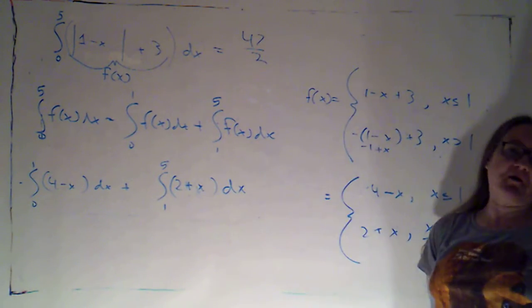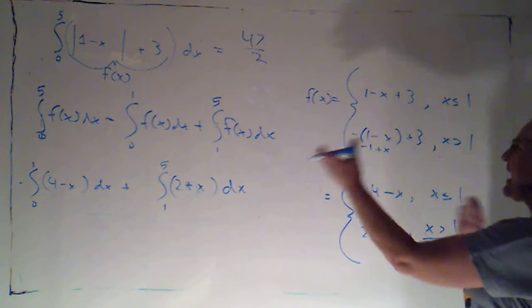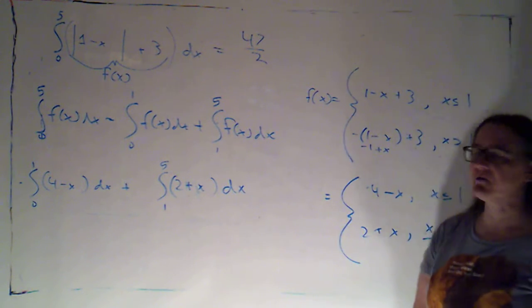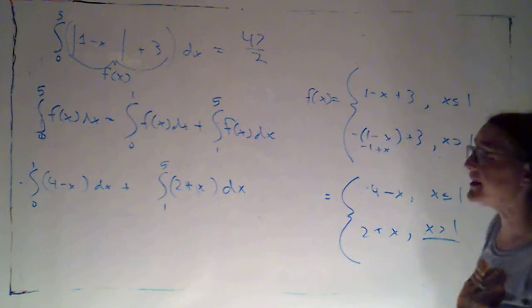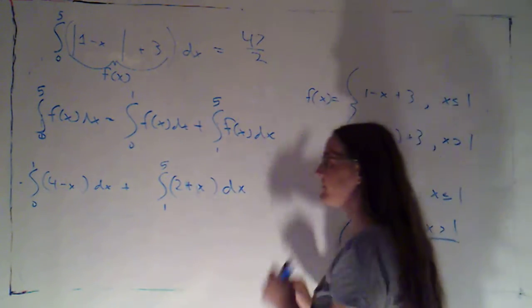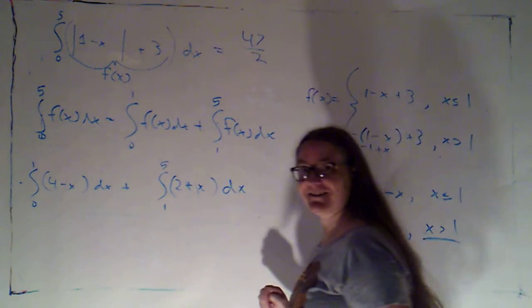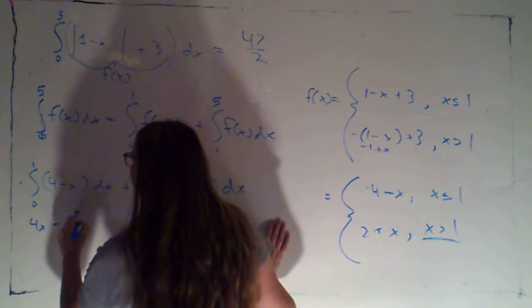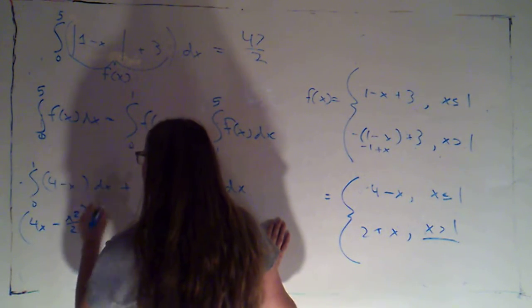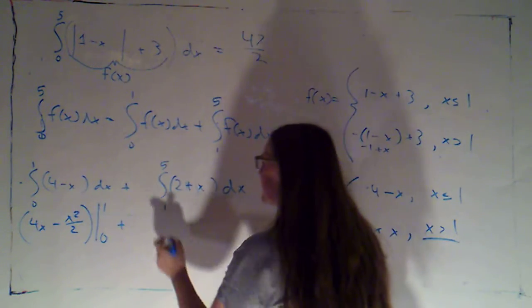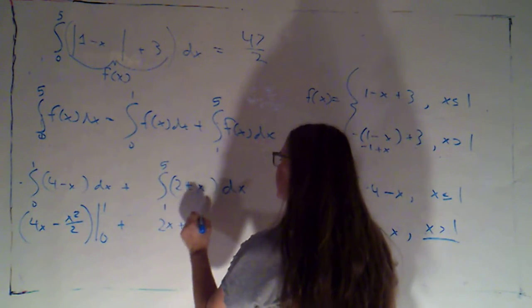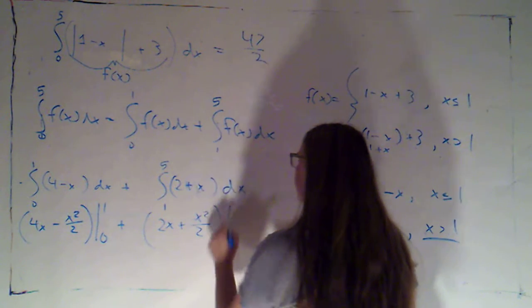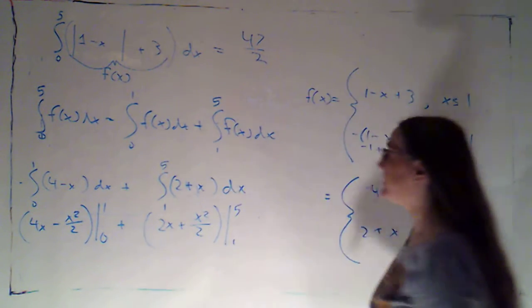Okay, that's really the hard part of the problem, figuring out how to break things up and write them piecewise. At this point, pretty straightforward application of just integrating some constants and using my power rule. So I'm going to get 4x minus x squared over 2, that's evaluated between 1 and 0. This will be plus 2x plus x squared over 2, that's evaluated between 5 and 1.